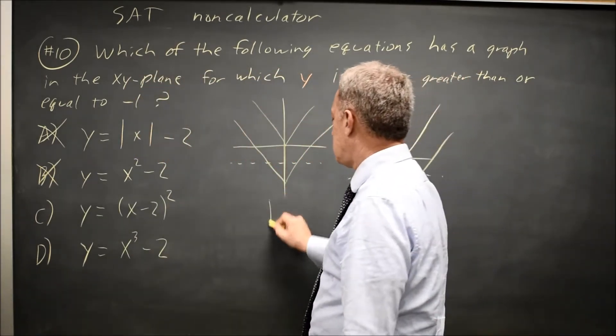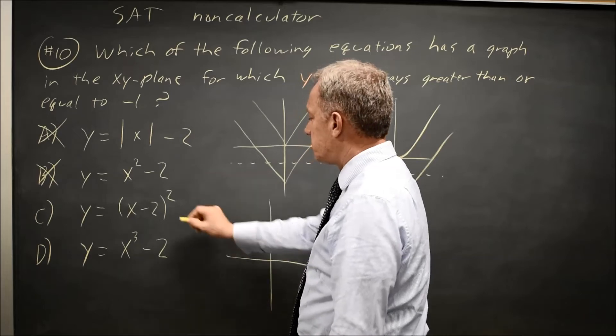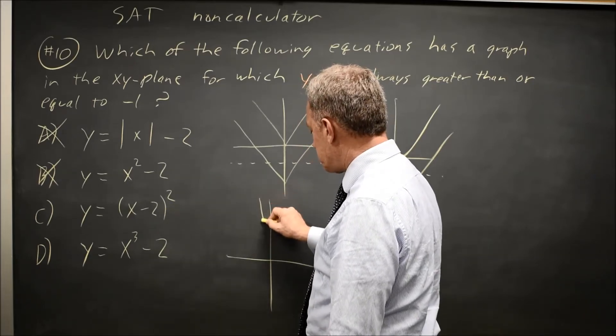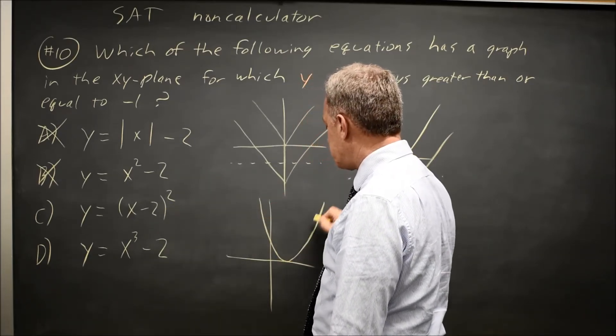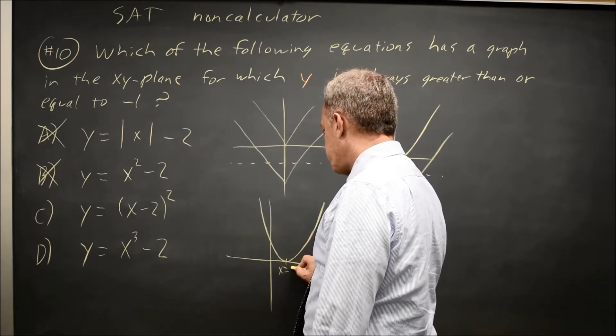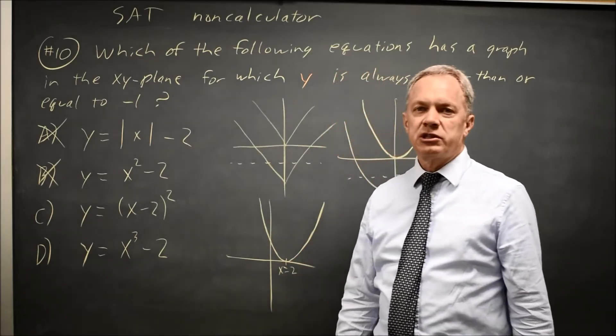Choice C is a parabola shifted to the right by 2, so instead of the vertex being at the origin, the vertex is at x equals 2, but at y equals 0.